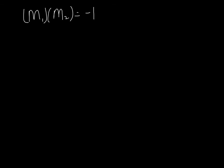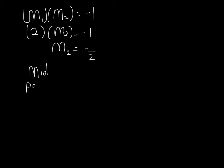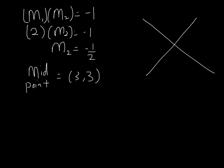We use M1 × M2 = −1 because we want to find the perpendicular gradient. Just now, we got the gradient for AB is 2. So 2 × M2 = −1. Therefore, the gradient for the perpendicular line is −1/2. And just now, we got the midpoint is (3, 3), so the midpoint coordinates are (3, 3). The gradient M equals −1/2.